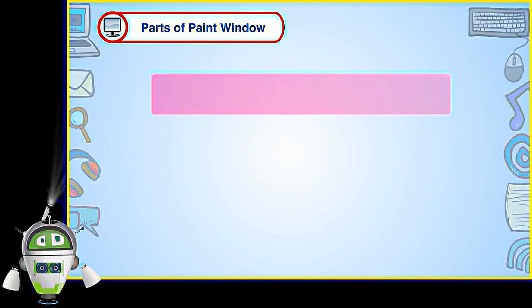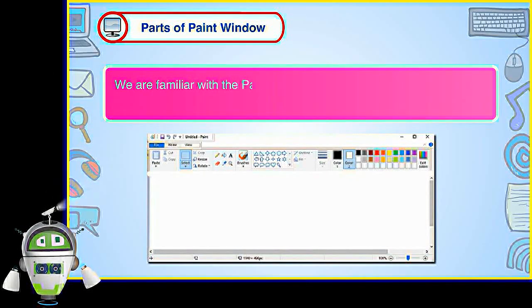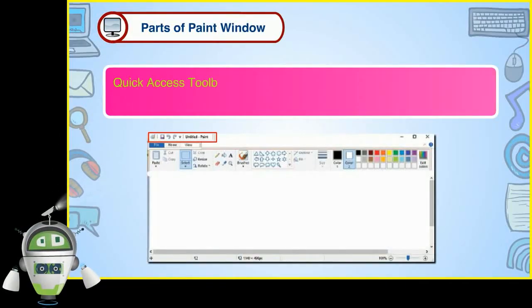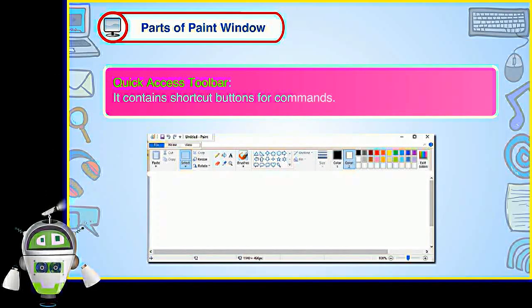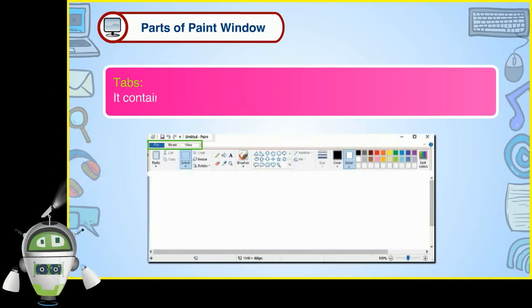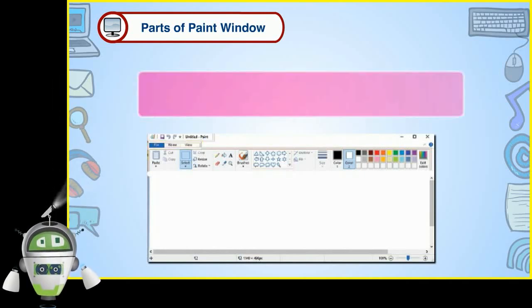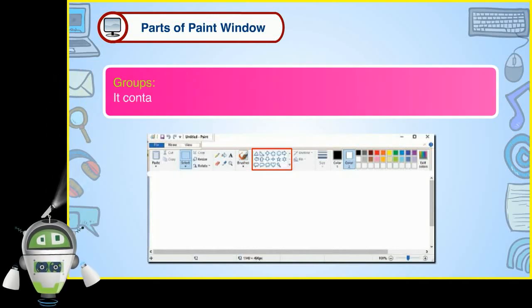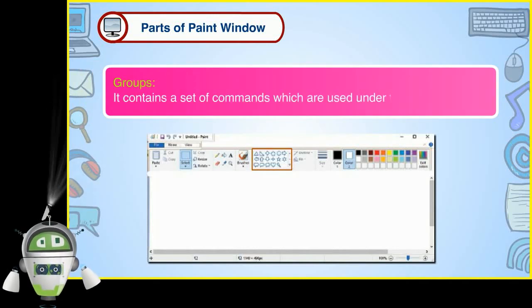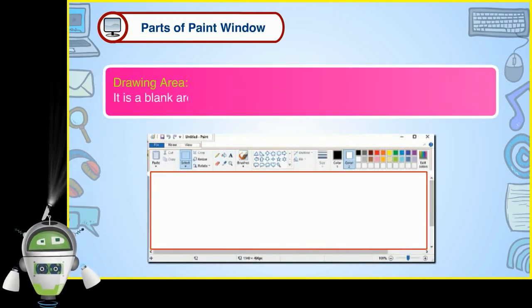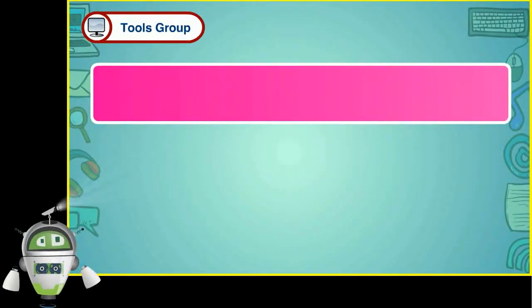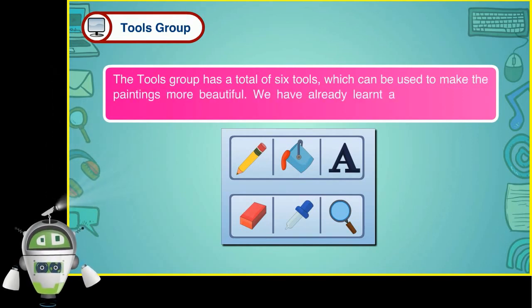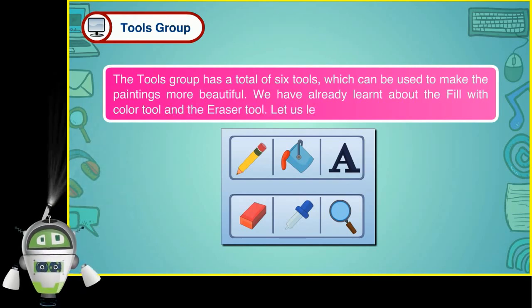Parts of Paint Window. We are familiar with the Paint software. It is used to draw and color. The main parts of a Paint window are: Quick Access Toolbar, which contains shortcut buttons for commands; Tabs, which contain various tools; Ribbon, which contains tabs, groups and commands; Groups, which contain a set of commands used under a tab; and the Drawing Area, which is a blank area to draw. The Tools Group has a total of 6 tools to make paintings more beautiful. We have already learnt about the Fill with Color Tool and the Eraser Tool. Let us learn about some other tools.